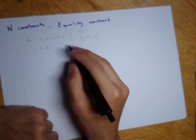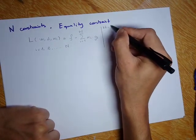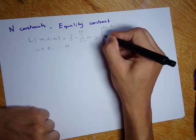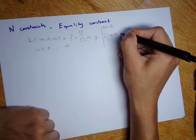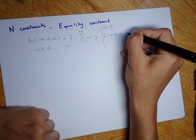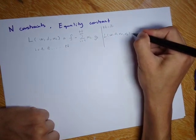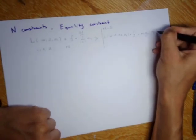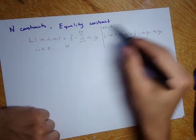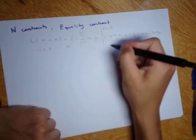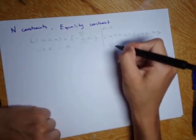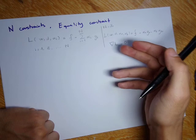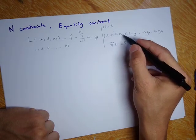For example, if N equals 2, the equation has alpha_1 and alpha_2, and becomes F minus alpha_1 times G_1 minus alpha_2 times G_2. We minimize this equation by taking the gradient of the Lagrangian and setting it equal to zero, which is nothing but the partial derivative with respect to these variables.